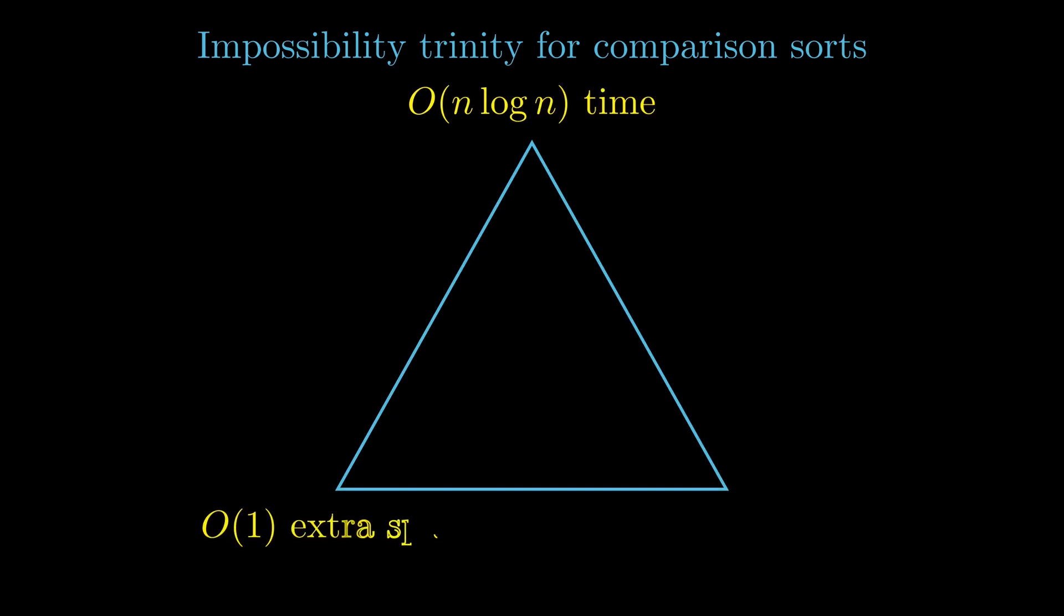There is another way in which you can look at sorting algorithms. You know, in life, there is no free lunch. If you are good at one thing, you will miss out on another. That idea leads us to the impossible trinity for comparison-based sorts.